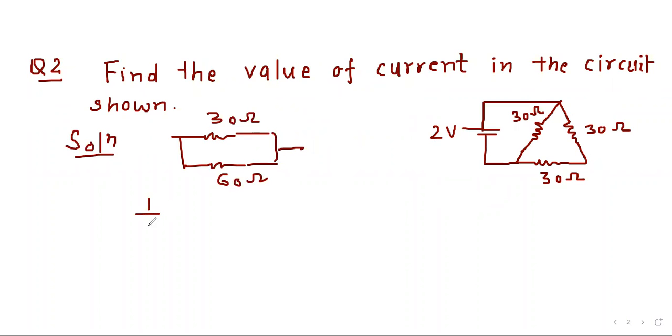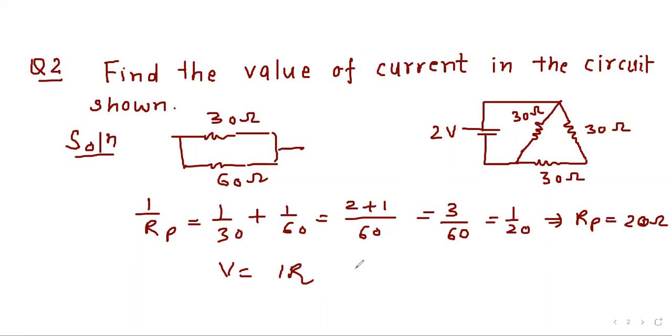So 1 upon Rp will be 1 upon 30 plus 1 upon 60. So 60, 2 plus 1, 3 by 60 or 1 by 20 which will give Rp equal to 20 ohm. Now V equals IR. So I will be equal to 2 by 20 or 1 by 10 which is 0.1 ampere.